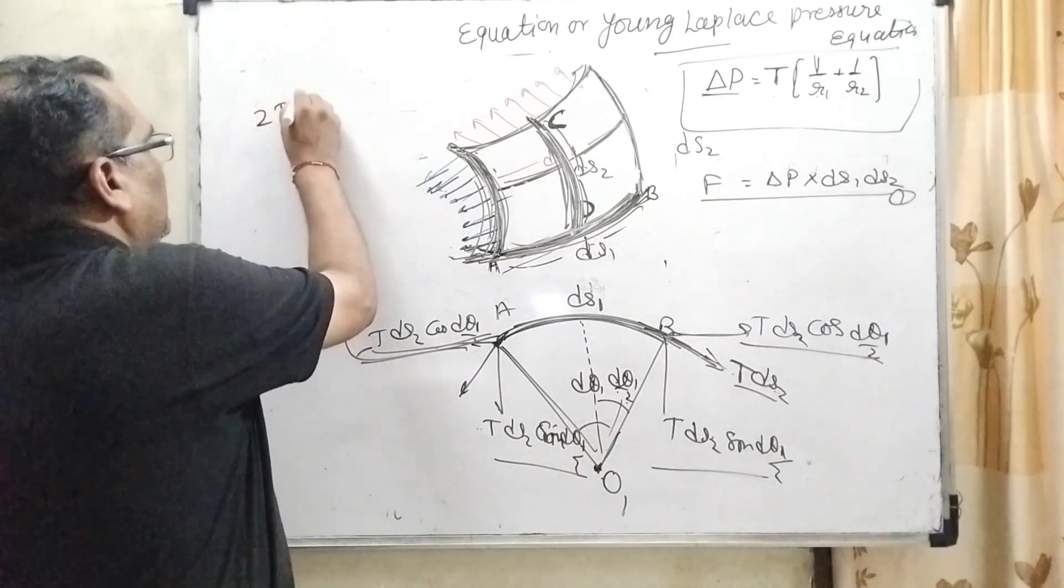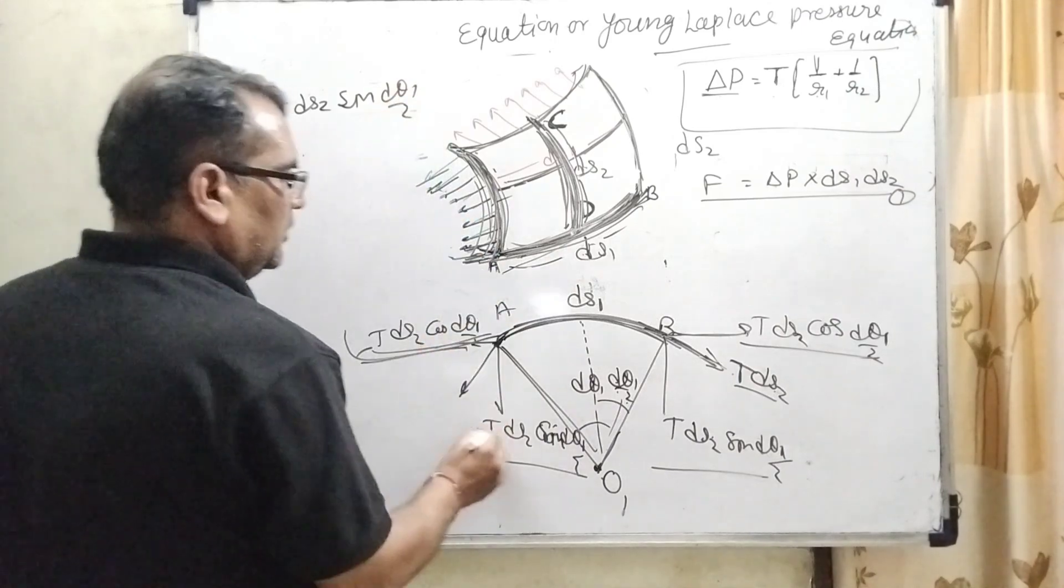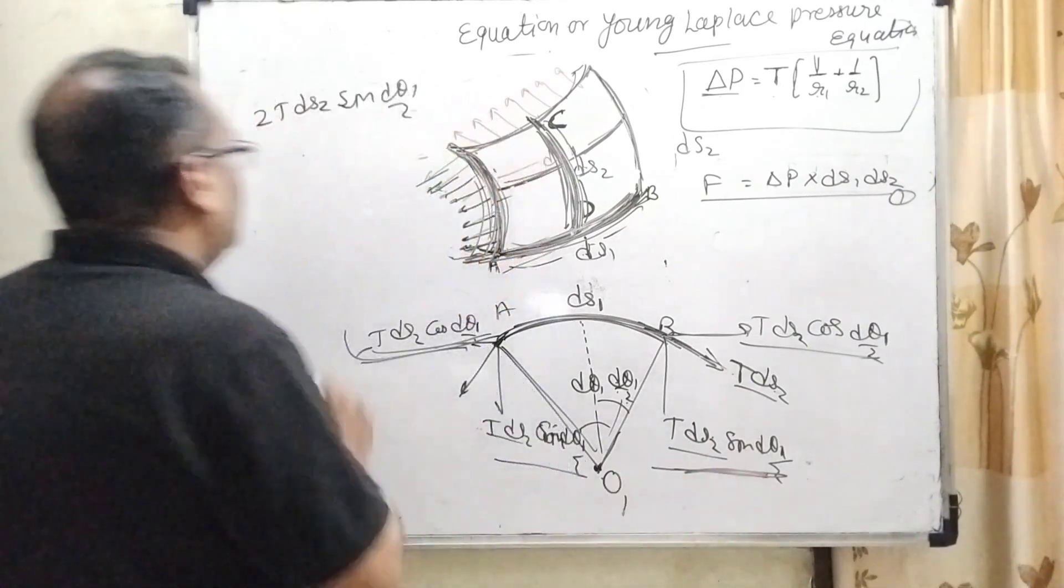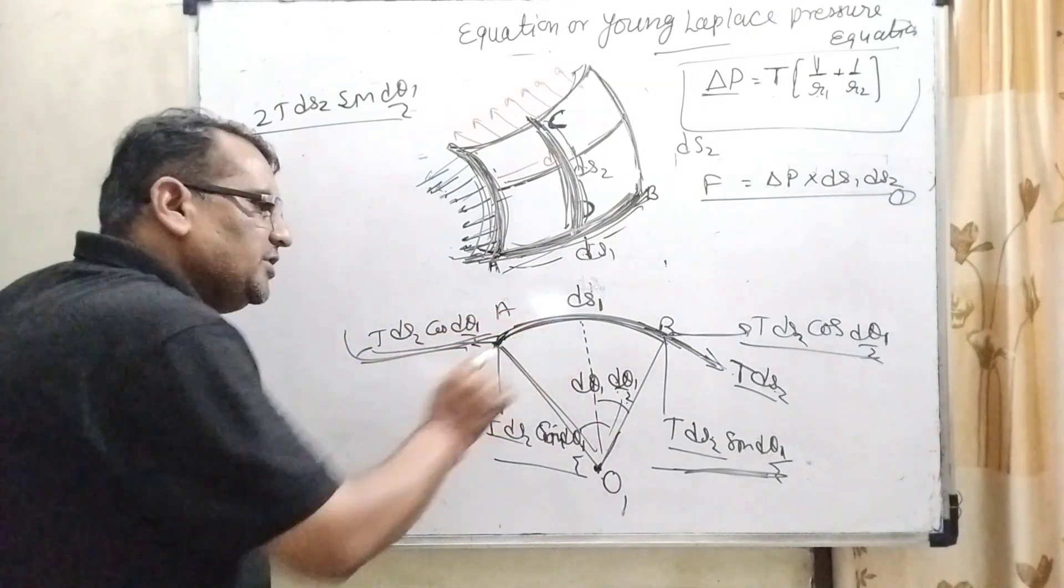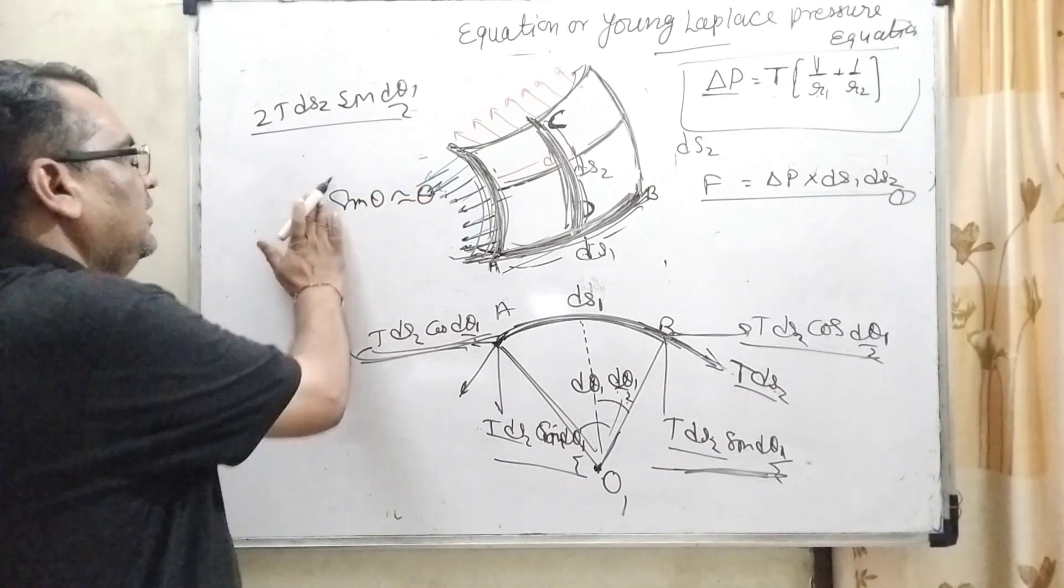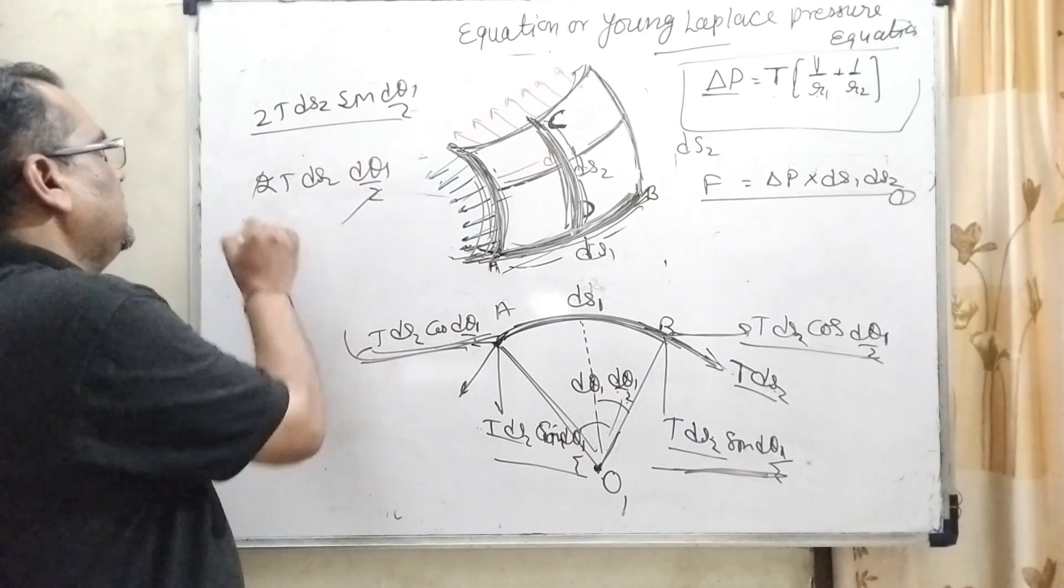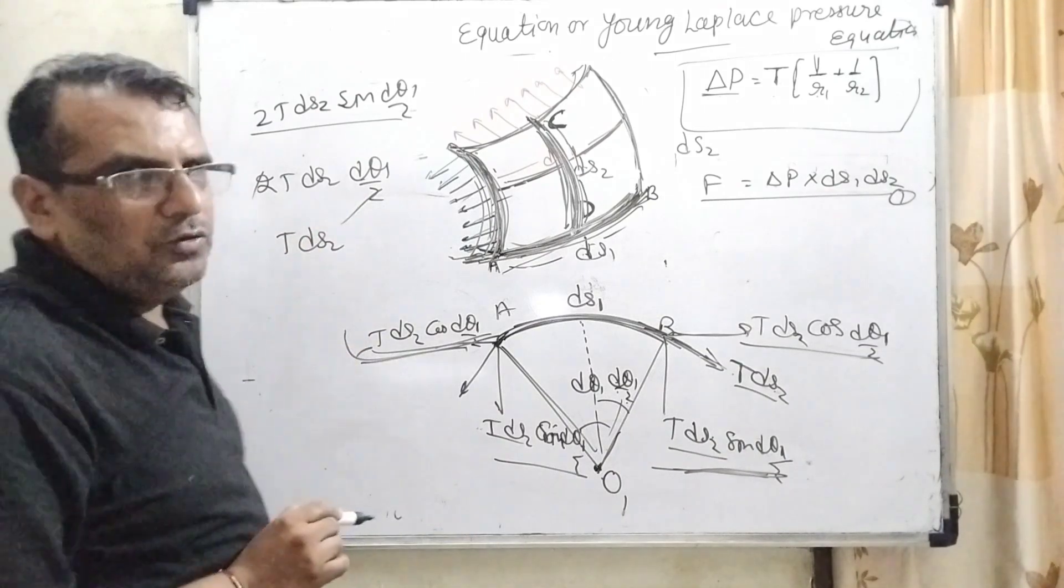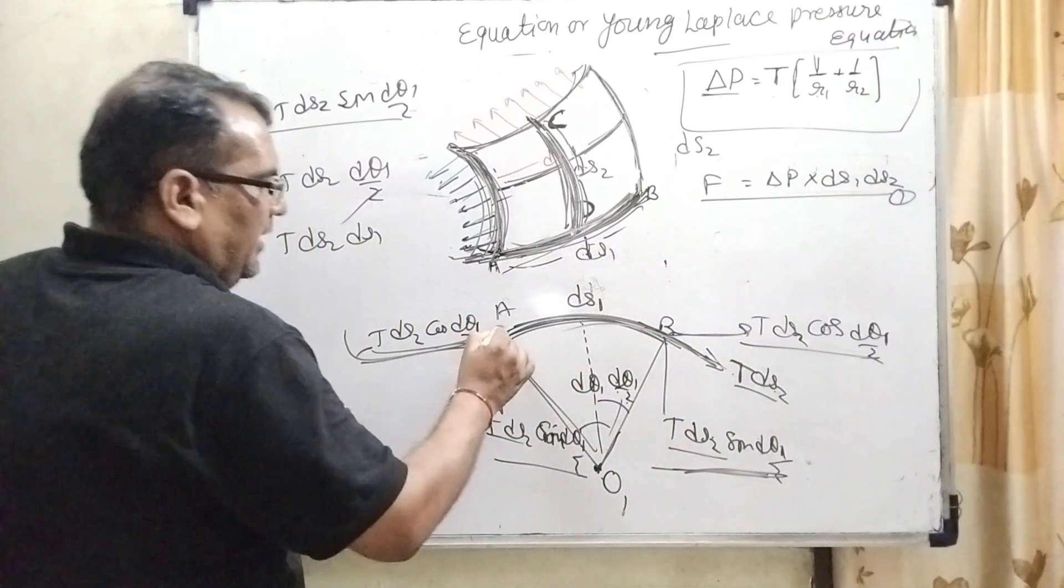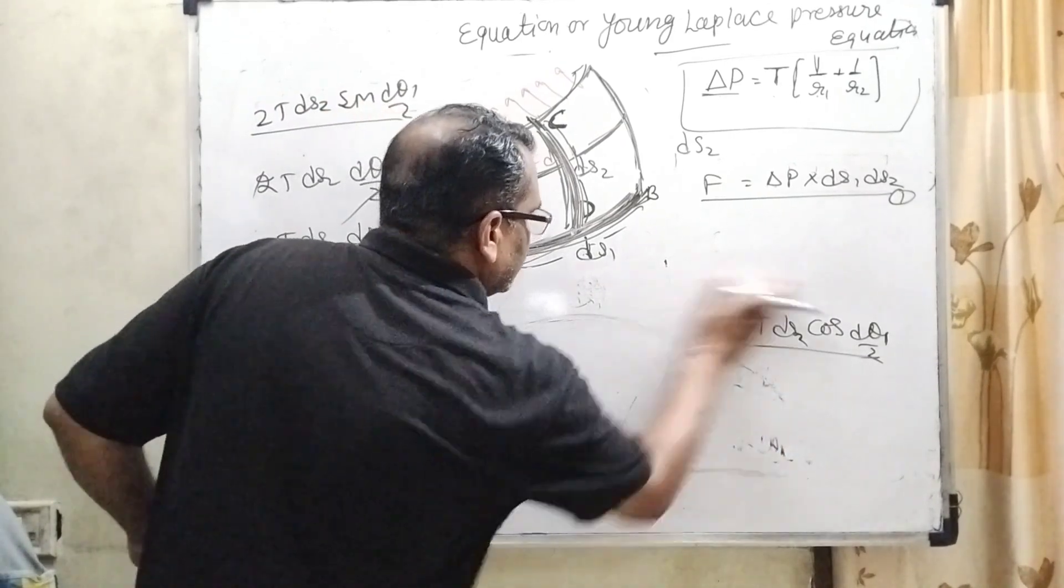The net force is acting towards this direction. So therefore, T DS2 sin D theta 1 by 2, total, this T DS2 sin D theta 1 by 2 ends up here. As we know, this angle at this curvature is very small, so sin theta, when theta is very small, can be written as theta. Therefore, 2 T DS2, it can be written as D theta 1 by 2. Two cancels out, T DS2. What is D theta? You know very well, angle equal to arc upon radius. The arc is DS1, and radius is R1. So this is for the first curvature.